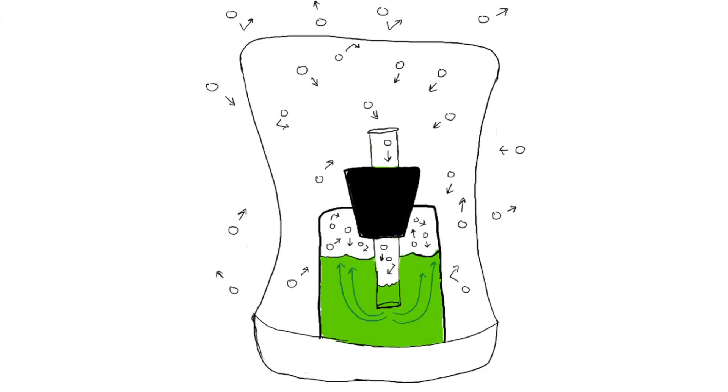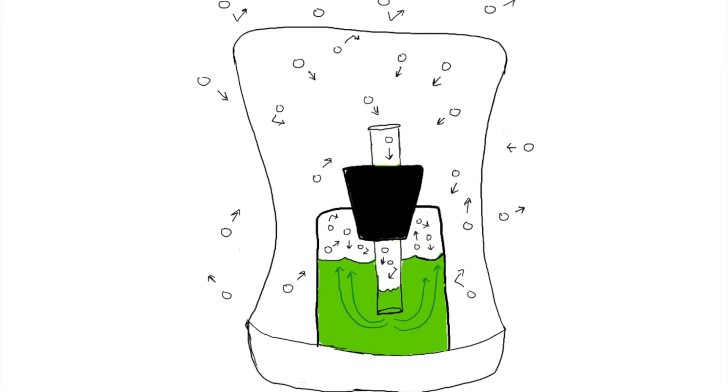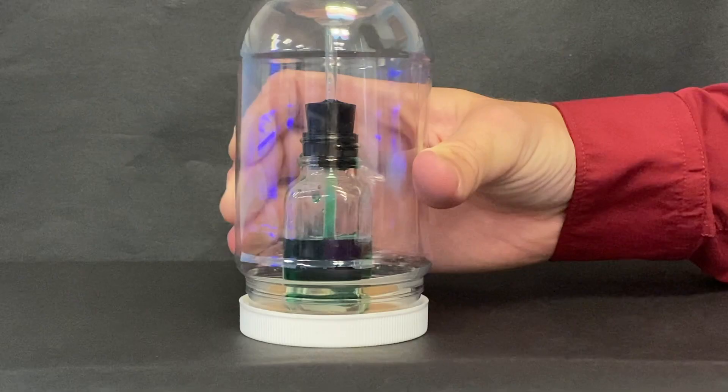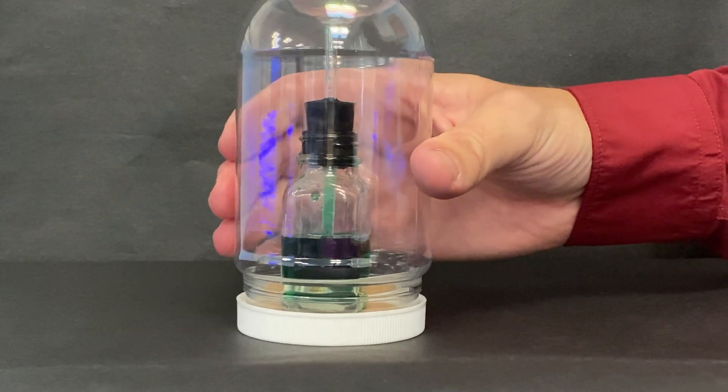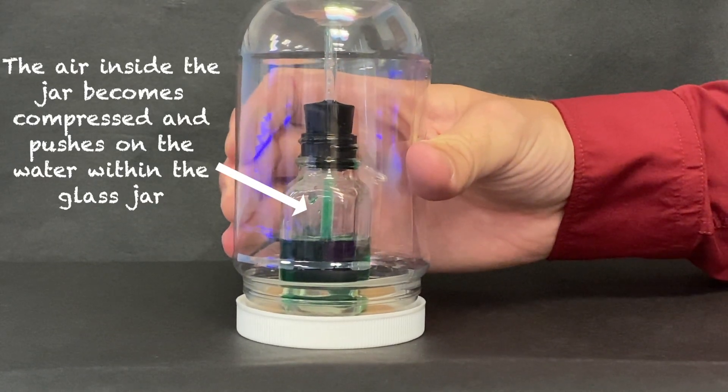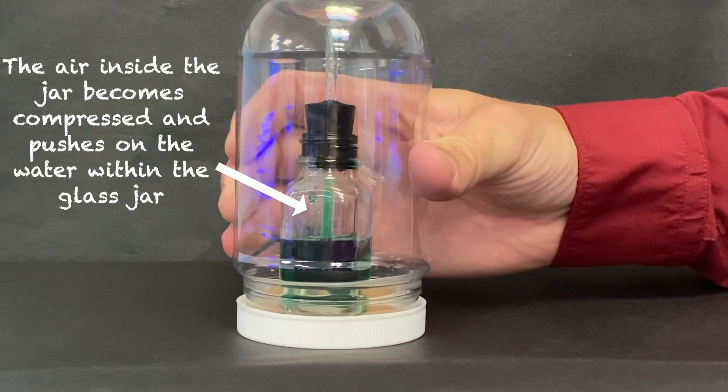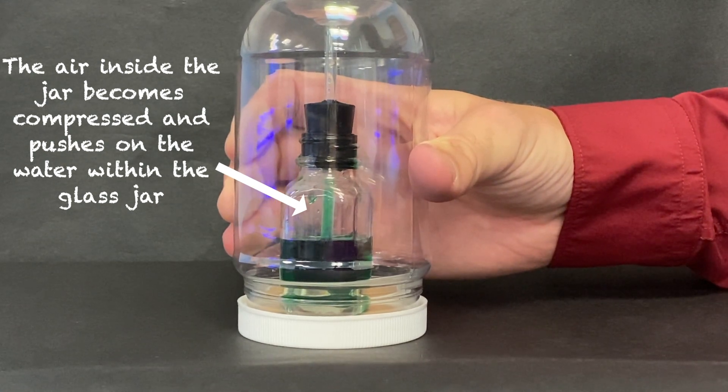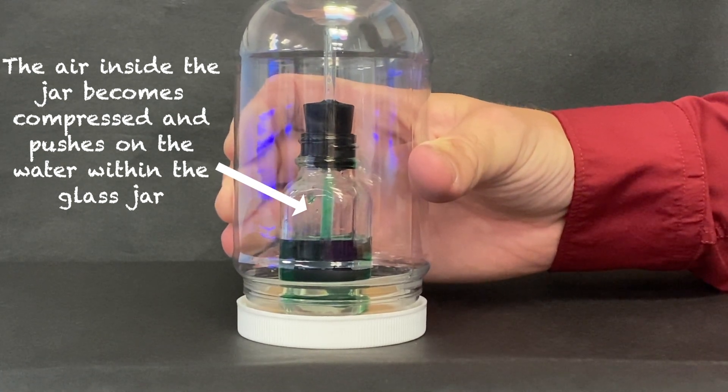You have to note that water does not compress but it puts pressure on the air inside of the glass bottle. When the air inside of the glass jar is compressed it puts pressure on the water in the tube and jar which puts pressure on the air inside of the little glass bottle which compresses the air in the bottle.